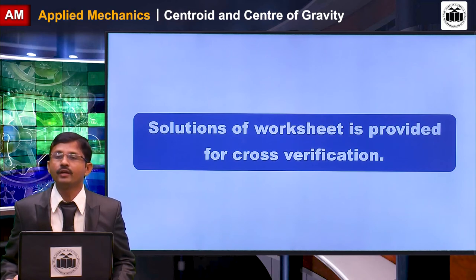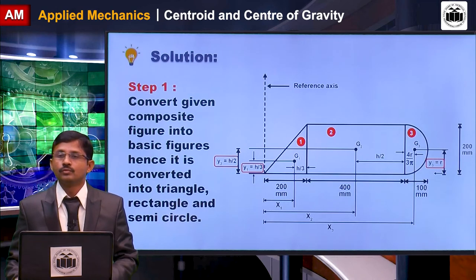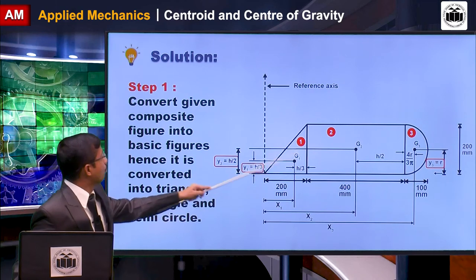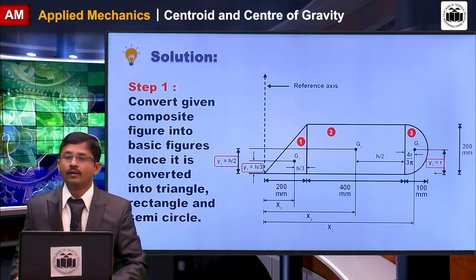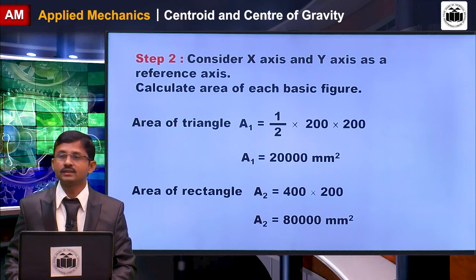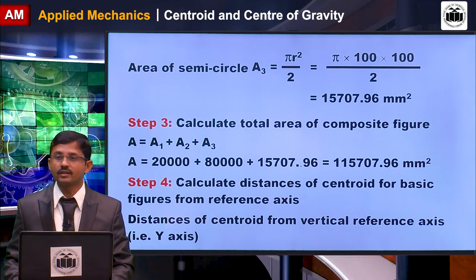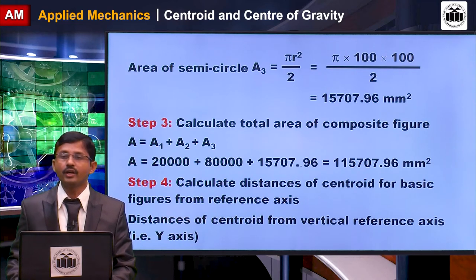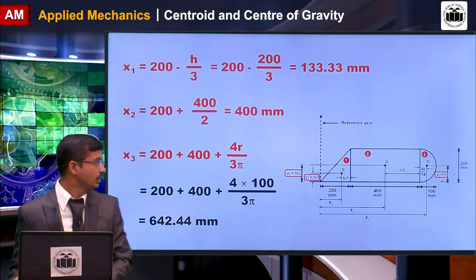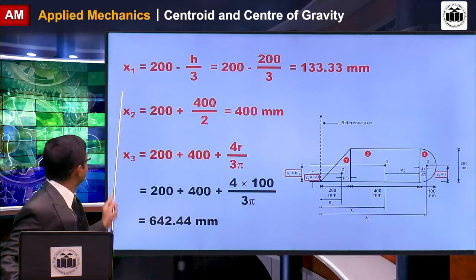The solutions of the worksheet are provided for cross-verification. For the first problem, you have to convert the composite figure into three diagrams: a triangle, a rectangle, and a semicircle. Then consider X and Y axes as the reference axes and calculate the areas of the composite figures: A1, A2, and A3. Then calculate the distances of the centroid for each basic figure from the reference axis — this step is very important as students often make mistakes calculating x1, x2, and x3.